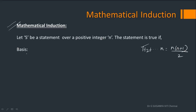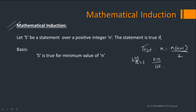The theorem works on two concepts. First, you have to set a basis where we need to prove whether the statement is true for the minimum value of n. Here, if you take this statement, the minimum value of n is 1. So we check: on the left-hand side, the value of n equals 1. On the right-hand side, replacing n by 1 gives 1 into 1 plus 1, which is 2 divided by 2, equal to 1. So the statement is proved for the minimum value of n.